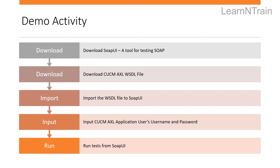Now that we understand the basics about CUCM AXL APIs, it's time for a demo activity. We are going to use a SOAP tool called SOAP UI for this testing. We will also need to download the CUCM AXL WSDL file — remember, the WSDL file contains details about the functions of the SOAP implementation. We need to import this WSDL file into the SOAP UI tool, input the username and password for the CUCM AXL application user, and then we are good to run some basic AXL API tests.